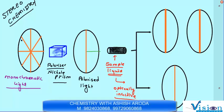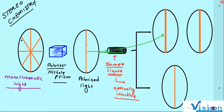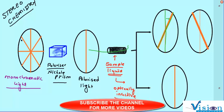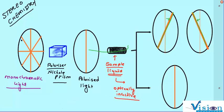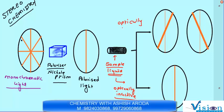When this light passes through the sample, this plane of propagation changes towards right or towards left. It changes its direction. If it is an optically active substance, what do we call it?